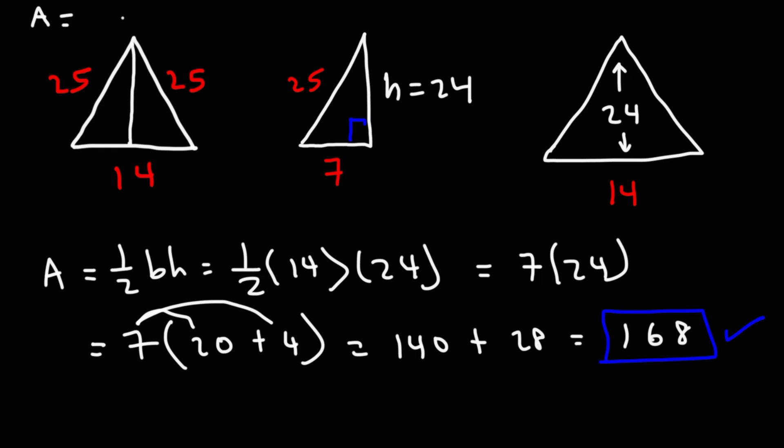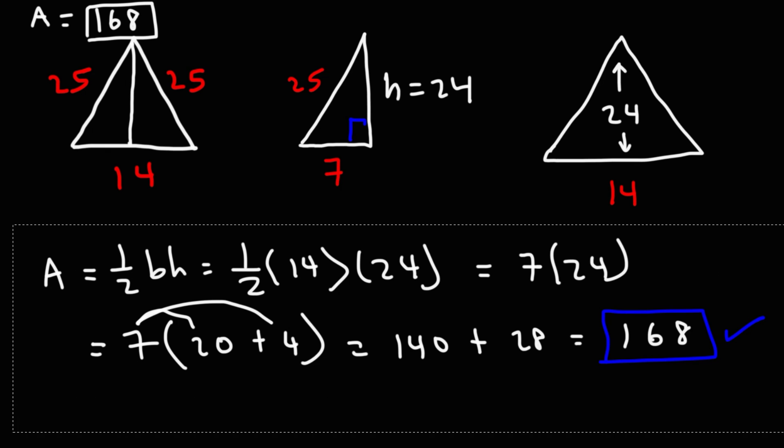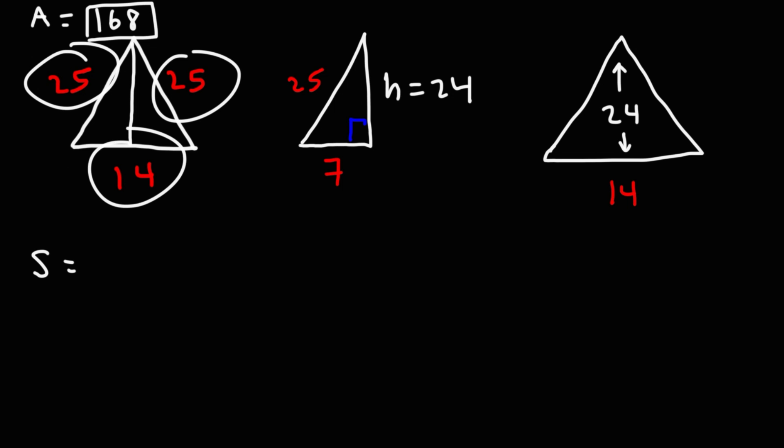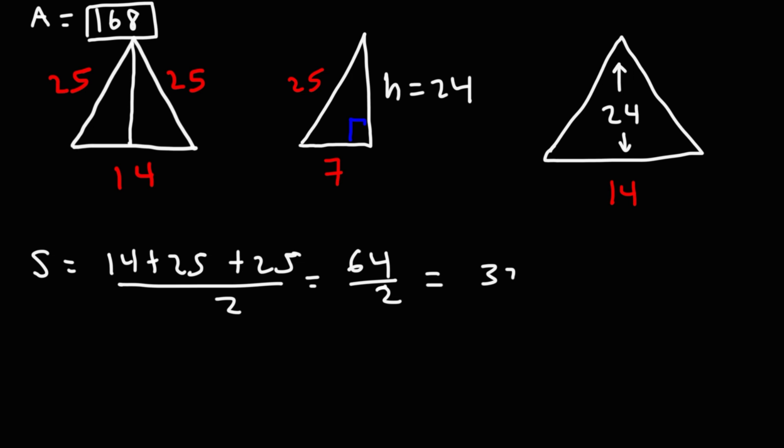And let's confirm it real quick, using Heron's formula. So, let's calculate s. s is going to be 1 half the sum of the three sides. So, 14 plus 25 plus 25 divided by 2.